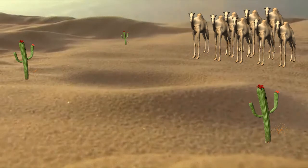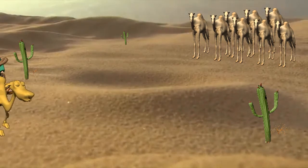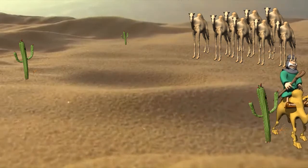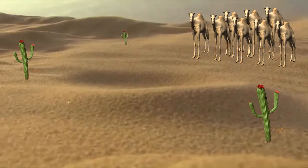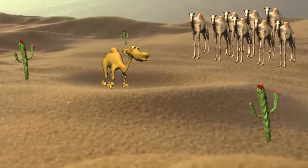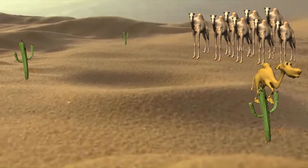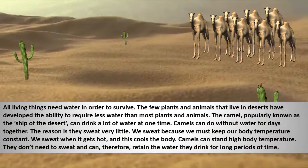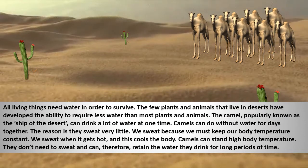Animals and plants living in the desert can survive on very little water. The camel, known as the ship of the desert, can drink a lot of water at a time and they can live without water for days together. The reason for that is that they sweat less. Unlike humans who sweat during hot days to keep our body temperature cool and constant, camels can withstand high temperatures and retain the water they drink for days.